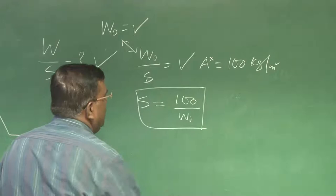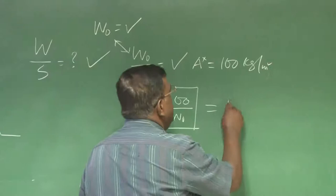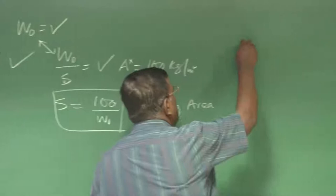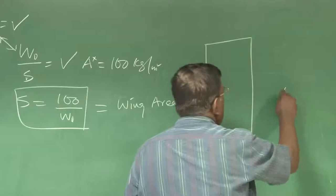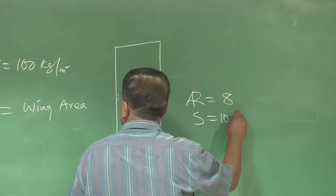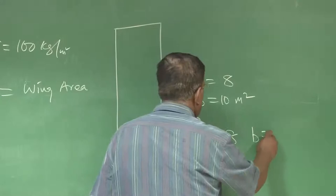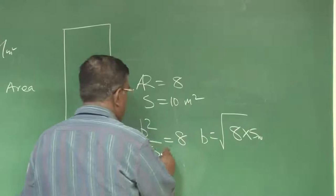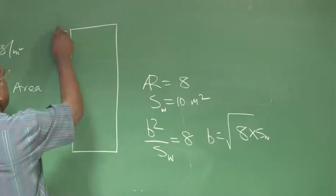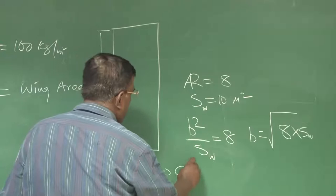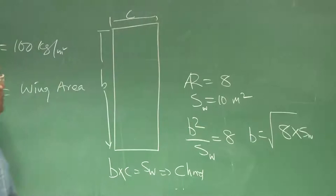Once I get S, the wing area, then I have to lay out that area. We have assumed some aspect ratio — let's say I have taken 8 — and let's say wing area is around 10 meters squared. Then I know B squared by SW is equal to 8, so B equals the square root of 8 into SW. From there I get a value of span, and once I know span, I know B into C equals wing area, so I get the value of chord.